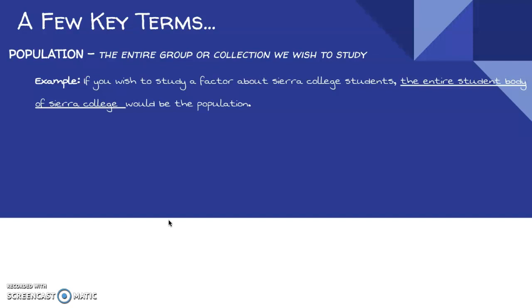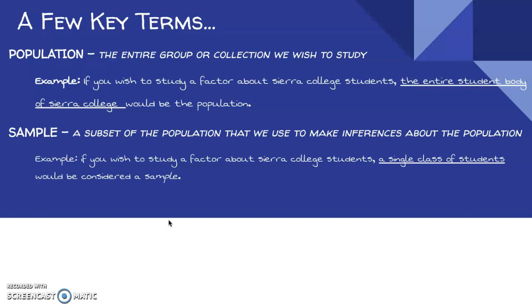From that population, we would usually collect a sample. A sample is a subset of the population that we use to make inferences about that population. For example, if we wish to study some factor of Sierra College students, like average height or proportion of students who use an iPhone, then we would take a sample. An example would be if we just look at one class of students, like our class. Our class of statistics students is a sample.